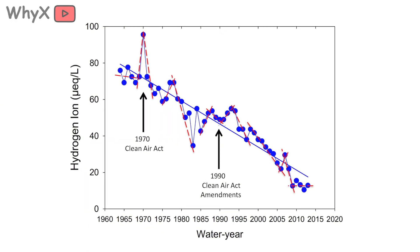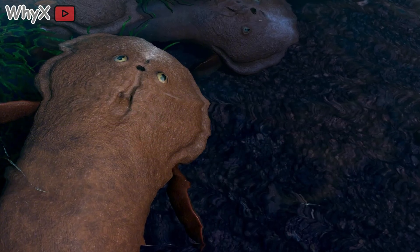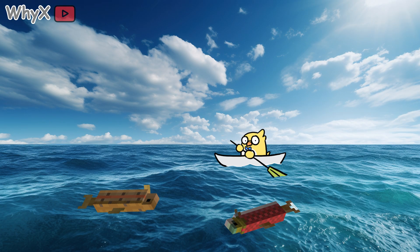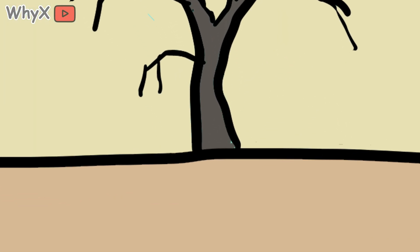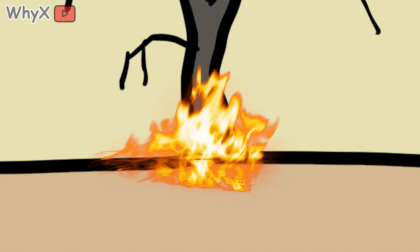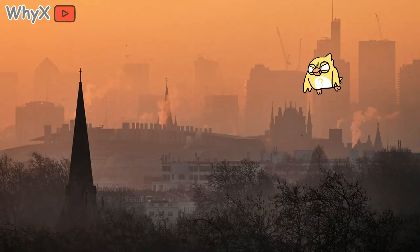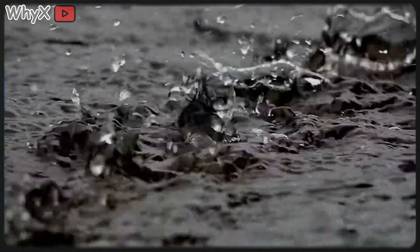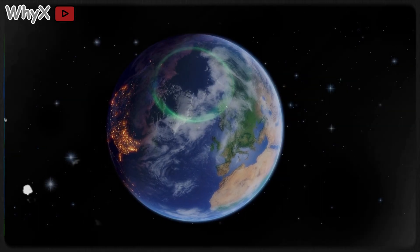One of the first alarm bells rang back in the 1950s and 60s, when Scandinavian scientists started noticing that lakes in Norway and Sweden were mysteriously losing fish. Entire populations of trout and salmon disappeared. Trees nearby began to thin out and die, their roots literally burned by acidic soil. It took years to trace the cause back to emissions from factories hundreds of miles away, in the United Kingdom and continental Europe. Pollution, it turned out, travels. The clouds that carry your acid rain don't care about national borders or political speeches. And that's when scientists began to realize something crucial: the sky is global.